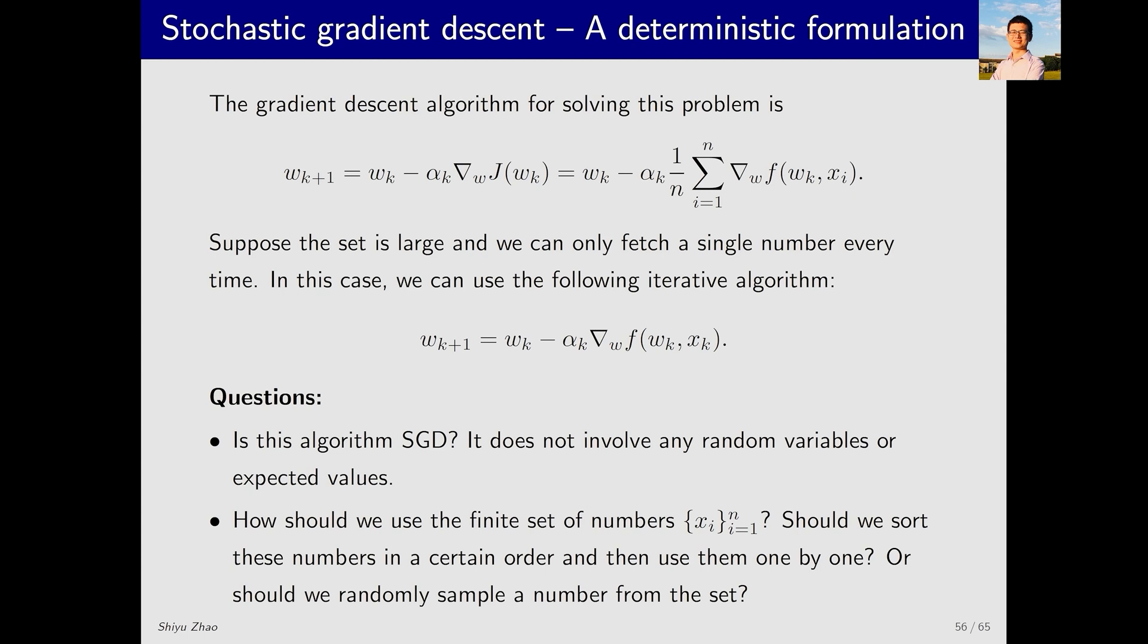The second tricky question is how to select x_i from this set. Should we arrange x_i in ascending order, or any specific order, and then select them one by one? Or should we randomly select from the set? If we select randomly, what probability distribution should we use? Can we use some numbers repeatedly, or must we avoid repetition? There are many such questions, and we will answer them next.